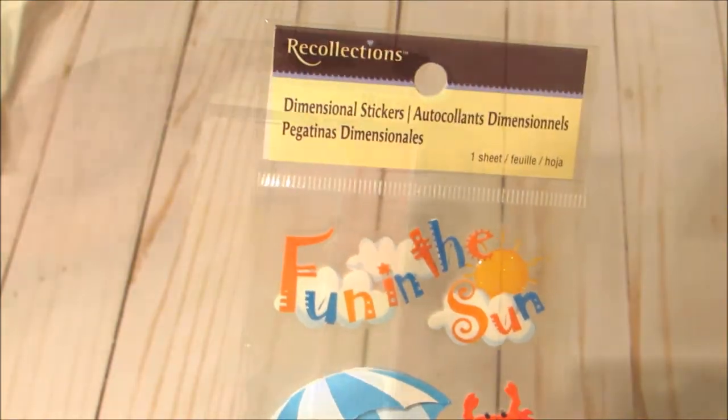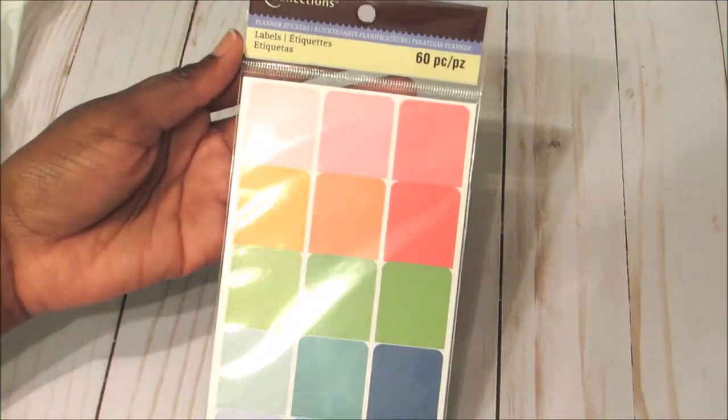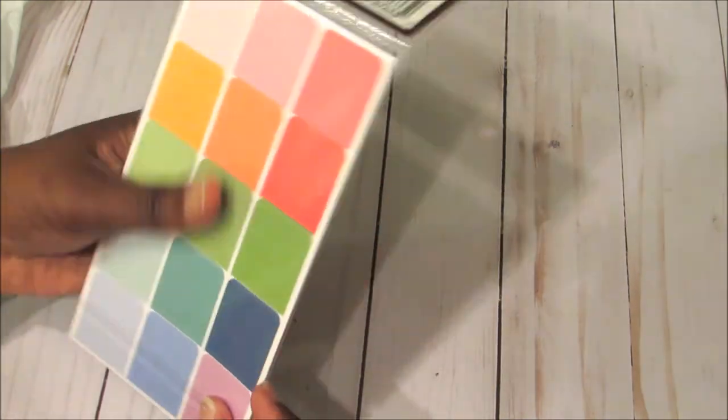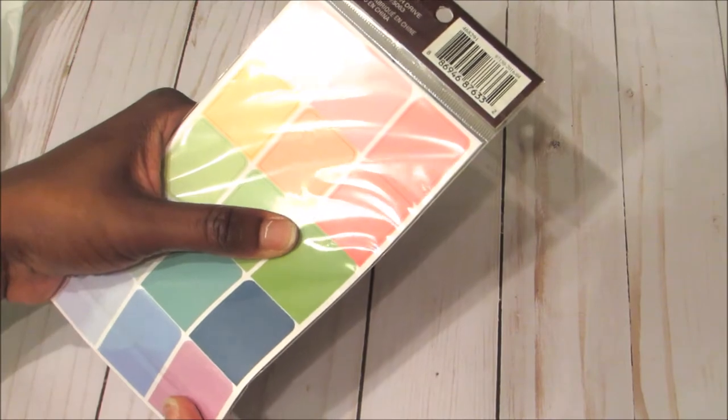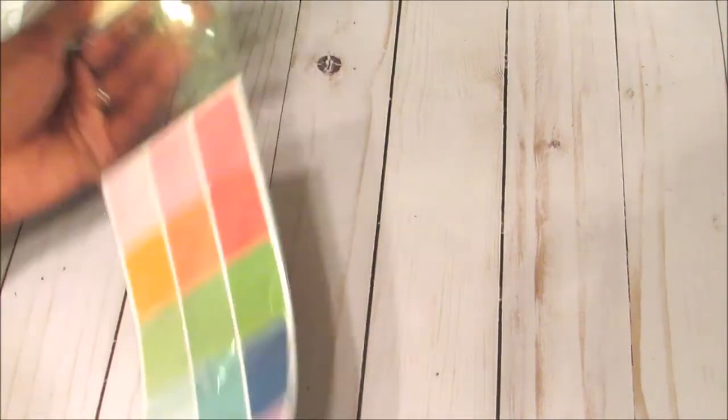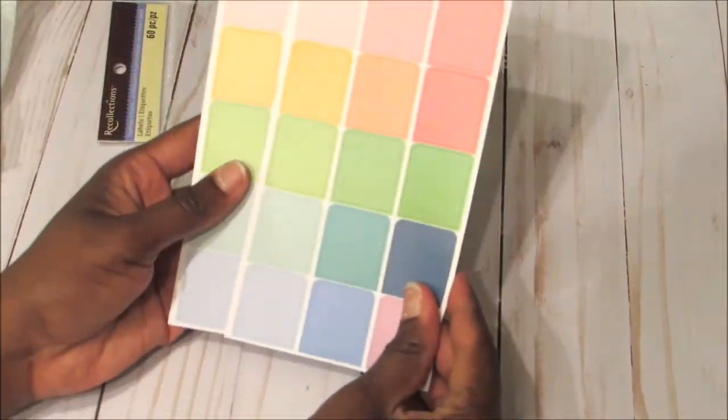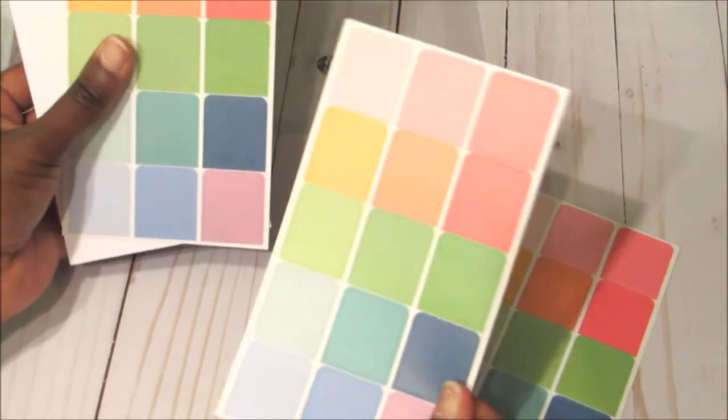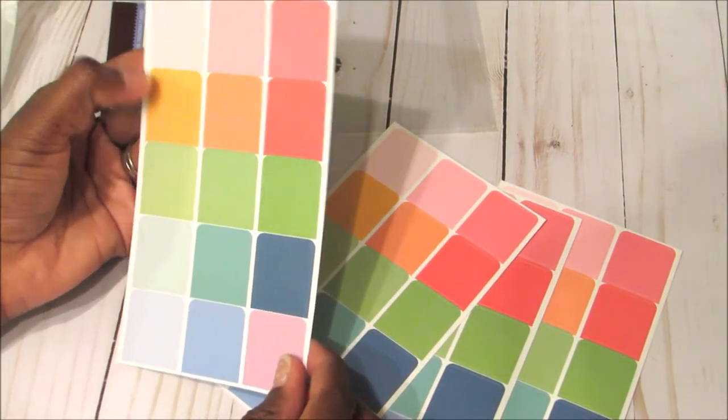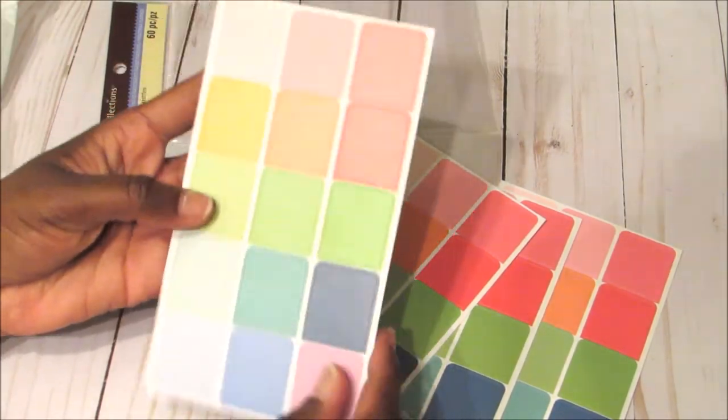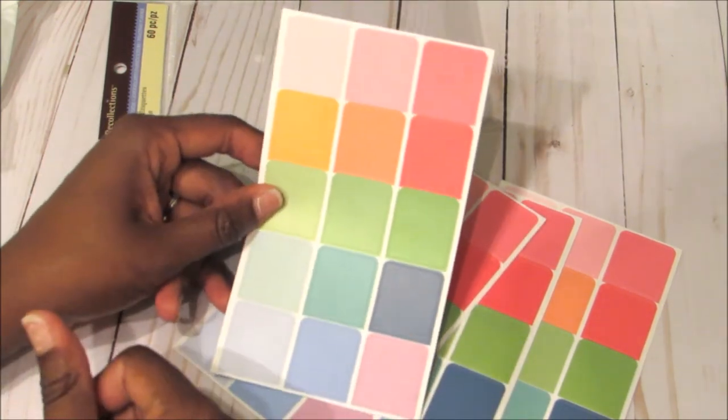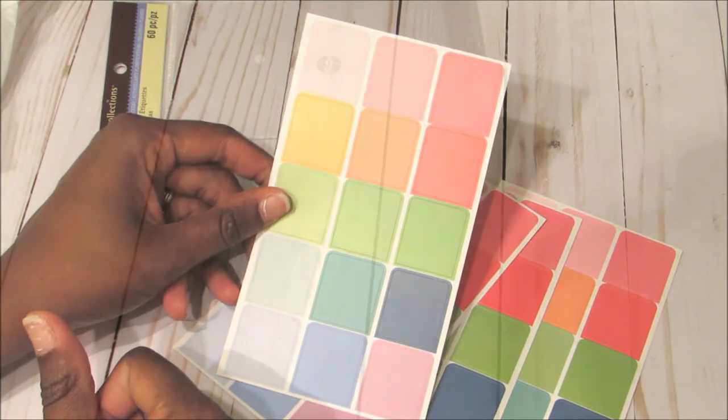These ones also, these are by Recollections. They're the labels and they're 60 pieces. And I'm going to use them like boxes, because that's what they are. They're just different color boxes. And you get one, two, three, four sheets. And each sheet has 15 on it, 15 pieces. And all these colors are colors that I will definitely be able to use.